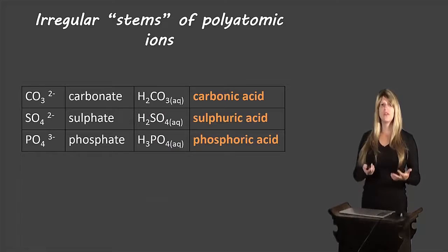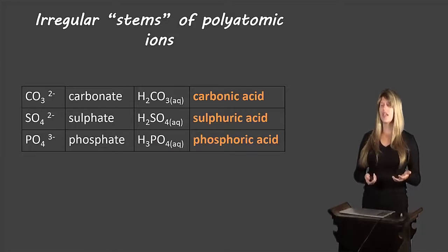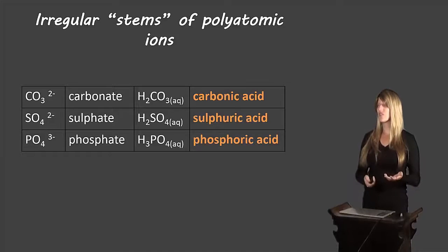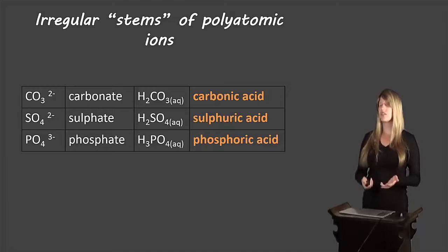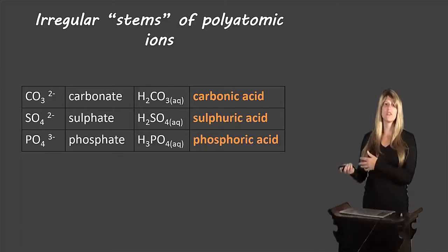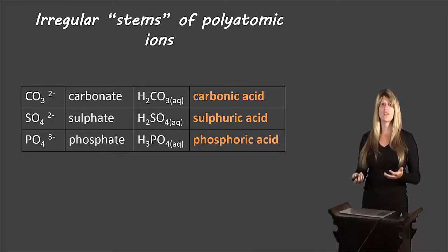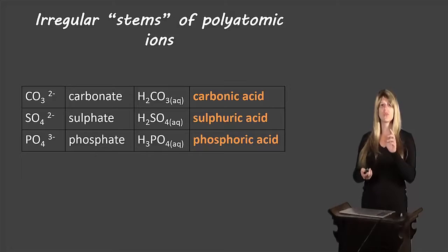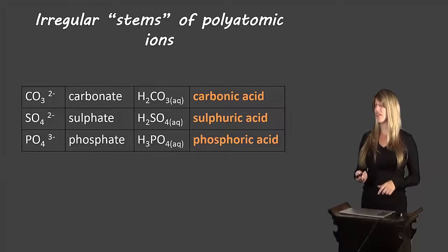There are a couple of irregular stems to memorize. For carbonate, we call it carbonic acid. For sulfate, it's sulfuric acid. And phosphate is phosphoric acid. You'll need to memorize those three because they go slightly against the normal rules of what the stem of the word would be.